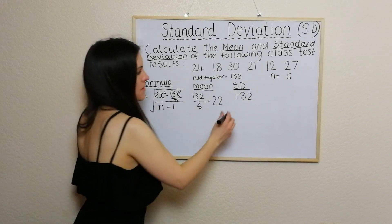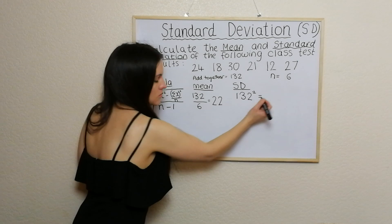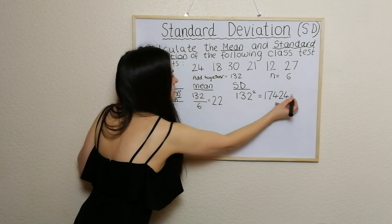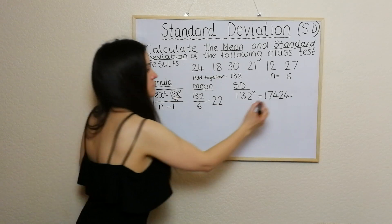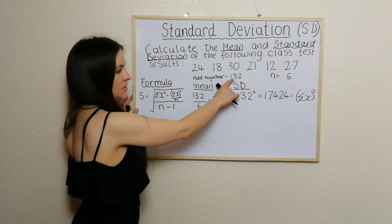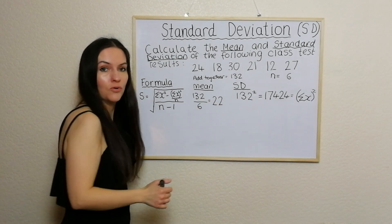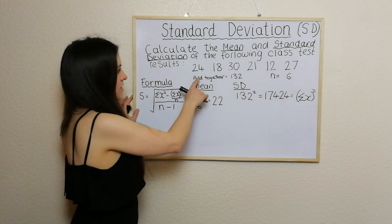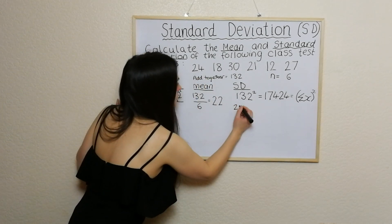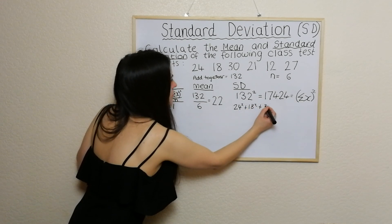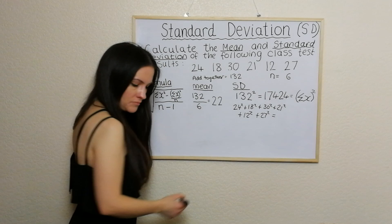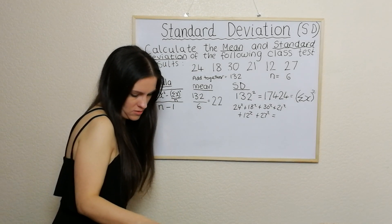I'm also going to write 132 here under the standard deviation column and square it, which makes up part of the formula. I'll also square each number and add them all together. That might sound long-winded, but you can do it in one line on your calculator: 24 squared plus 18 squared plus 30 squared plus 21 squared plus 12 squared plus 27 squared. When I do that, I get 3114.